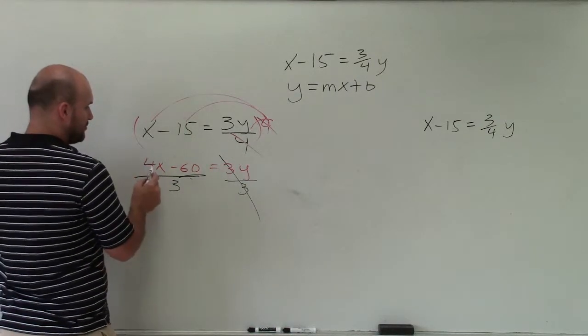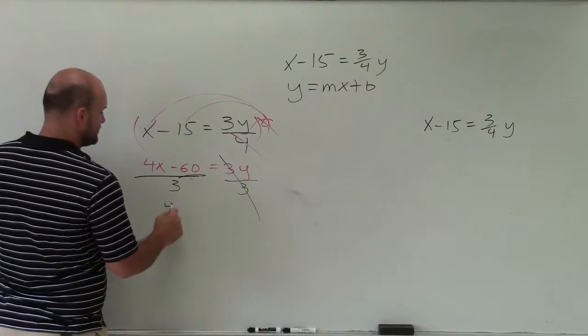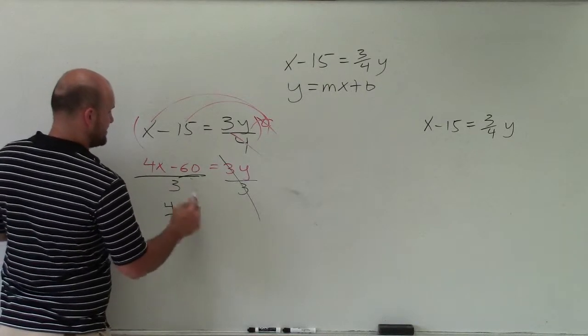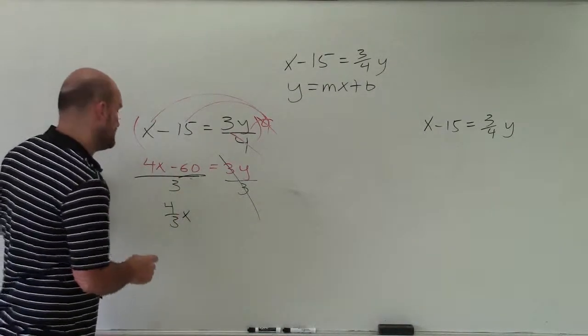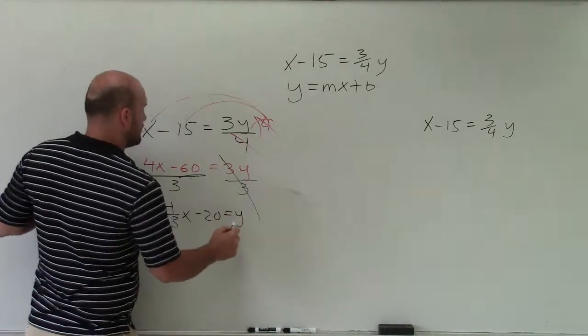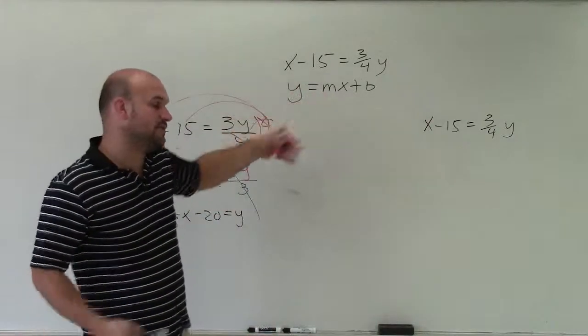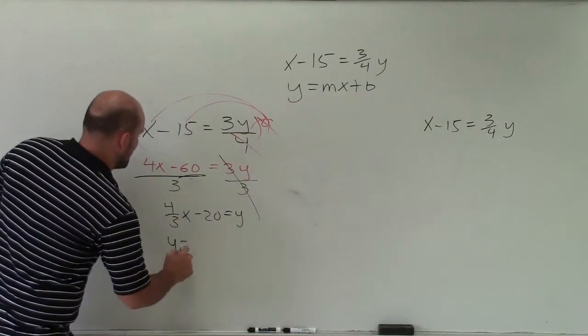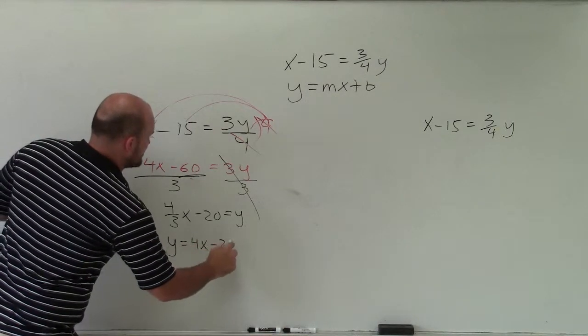So that goes to 1. Well, 4x divided by 3 is just going to be left with four-thirds x. Negative 60 divided by 3 is going to be negative 20 equals y. Now, to write it into slope-intercept form, I can just rewrite this as y equals four-thirds x minus 20.